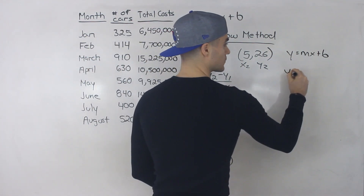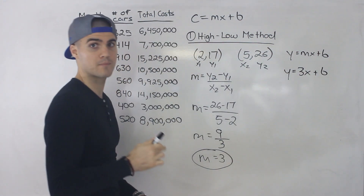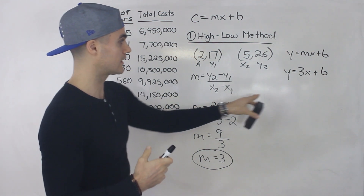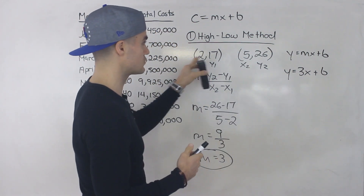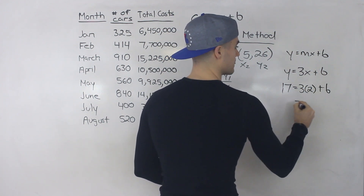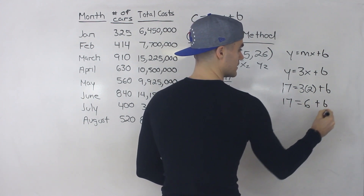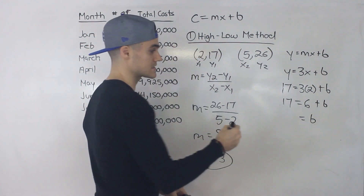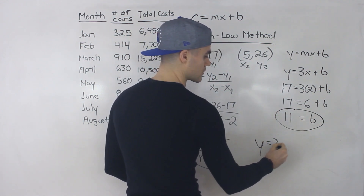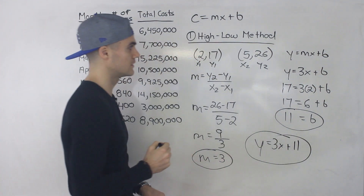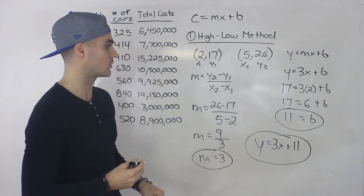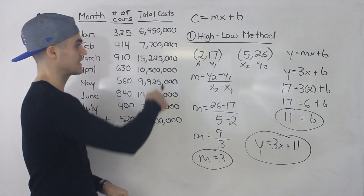So we have y equals 3x plus b, but we have to find that b value. We take either one of these points and plug it in for x and y, then solve for b. Using the point (2, 17): 17 equals 3 times 2 plus b, so 17 equals 6 plus b. Bringing the 6 over: 17 minus 6 gives us 11. So b equals 11, and the equation of the line is y equals 3x plus 11.